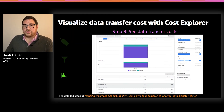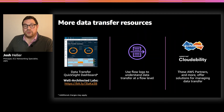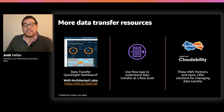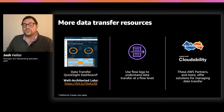Some customers want more options in how they visualize data transfer on AWS. For those customers, you can use data from the AWS Cost and Usage Report to create dashboards in many popular analytic tools. We've published guidance on how to use Amazon Athena and Amazon QuickSight to ingest the Cost and Usage Report and build dashboards from that data. Step-by-step guidance for creating the Athena views and QuickSight configuration is available at the link provided. It's important to note that additional charges may apply to using Amazon Athena and QuickSight.